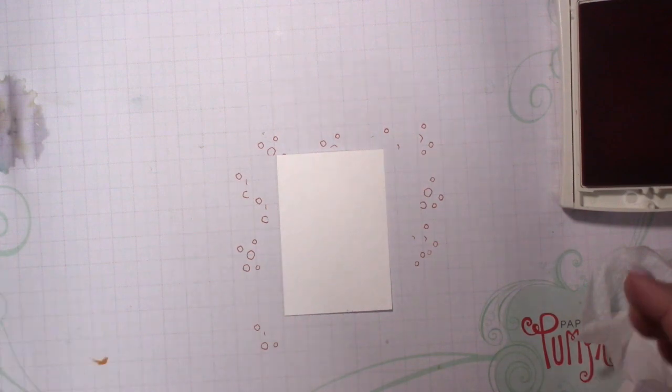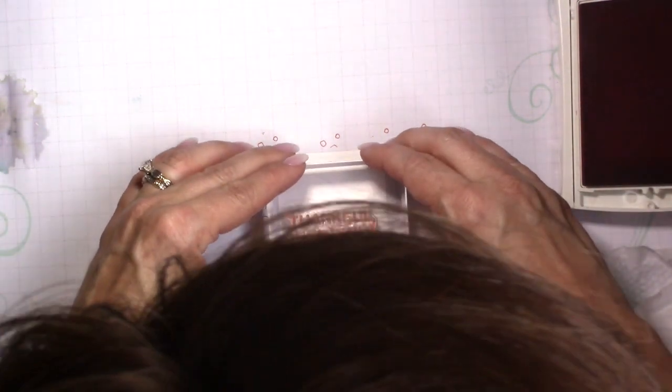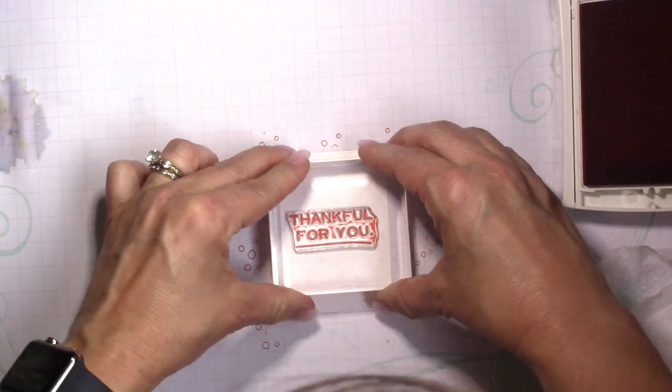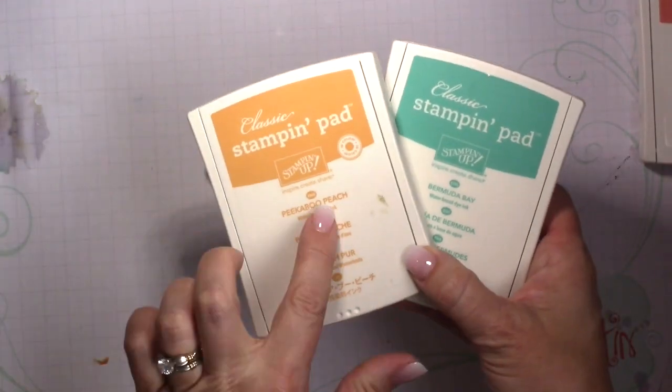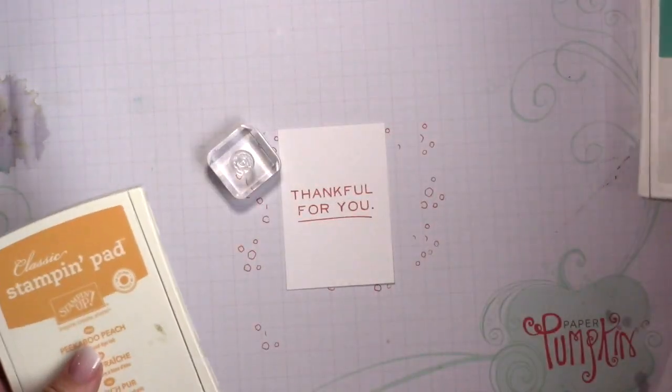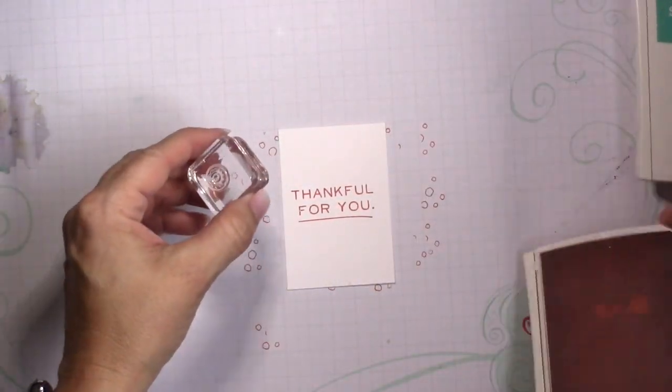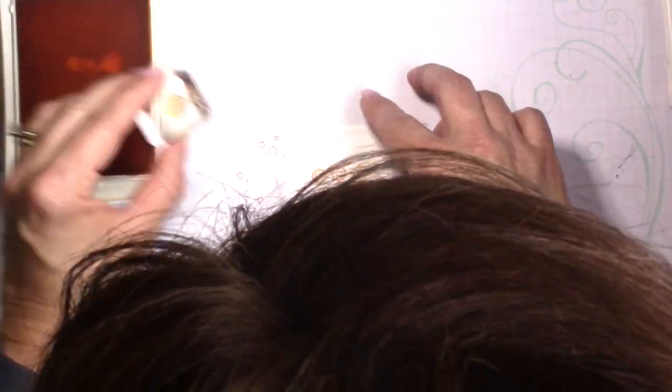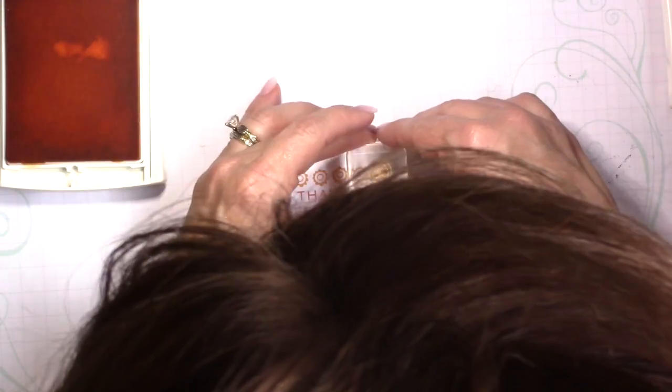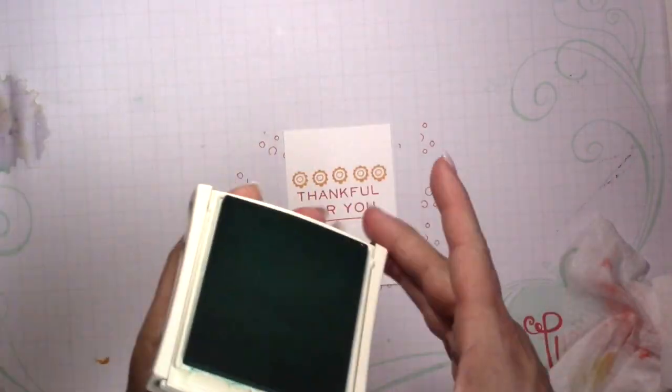So this is just going to go right in the middle of that. And I apologize for my head—I'm stamping on the floor so I didn't realize my head was in the way. So the first two colors I'm going to start off with are Peekaboo Peach and Bermuda Bay, and that little flower image. So again, sorry for my head. I sped this up so that you didn't have to see my head so much. Thank goodness I don't have gray showing.